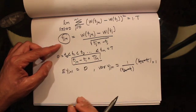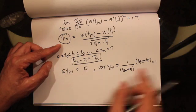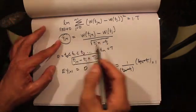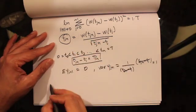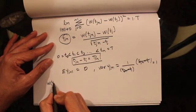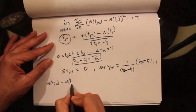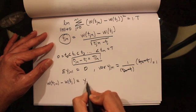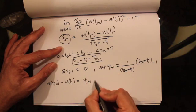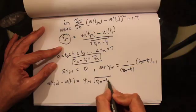We can rewrite this equation: W(t_{j+1}) minus W(t_j) is equal to Y_{j+1} times the square root of t_{j+1} minus t_j.